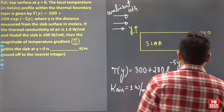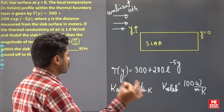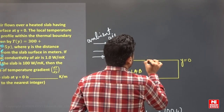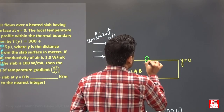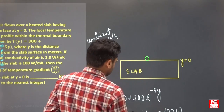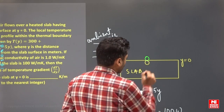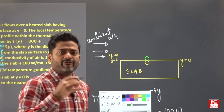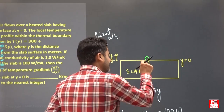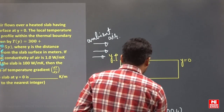Now the magnitude of the temperature gradient dT/dy within the slab at y equals zero is asked. To understand this, consider two molecules at the interface — one molecule belongs to the slab (yellow color) and one belongs to the air (green color). The question asks for the temperature gradient inside the slab at y equals zero.